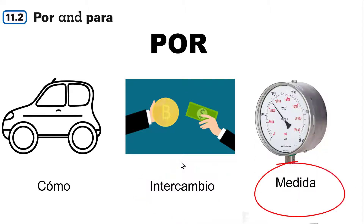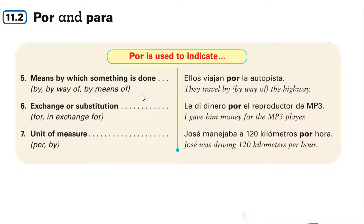And then, medida — unit of measure. For example, él estaba manejando a veinte millas por hora. Iba muy lento. Por hora. More examples: ellos viajan por la autopista. Exchanges or substitution, and then the unit of measure — that we already talked about.